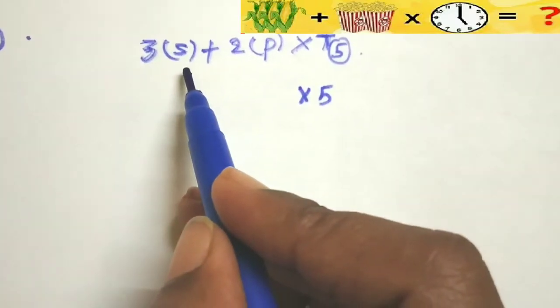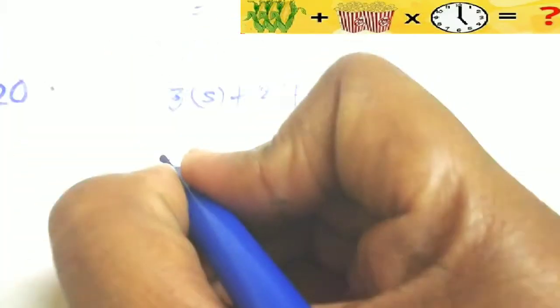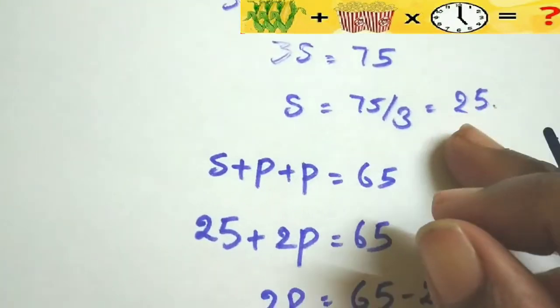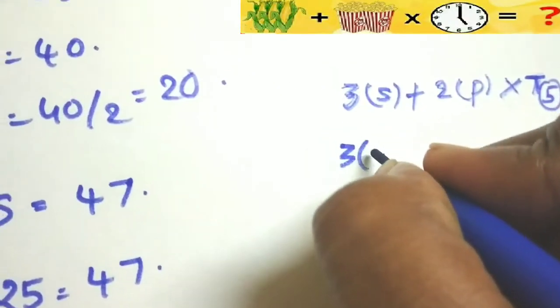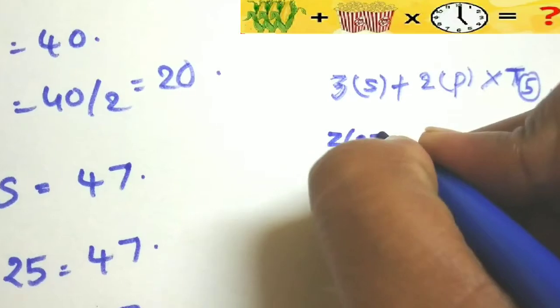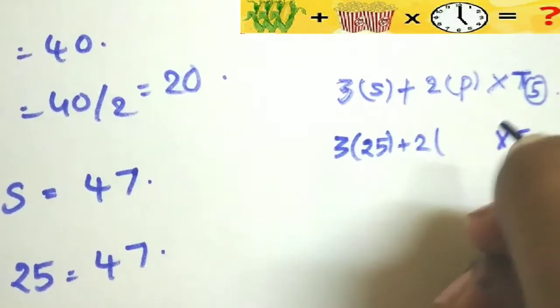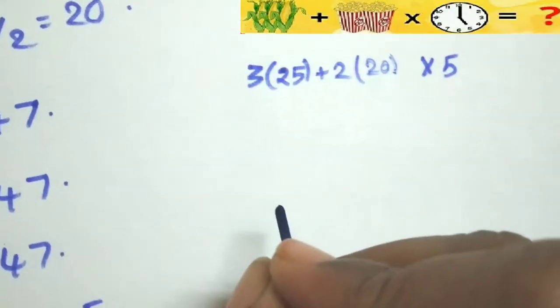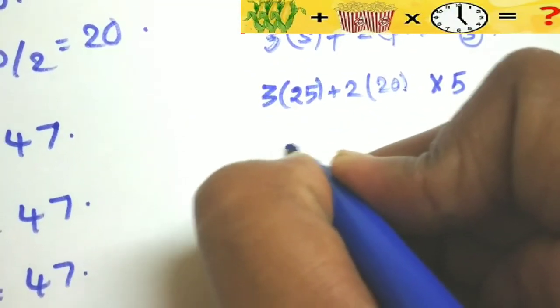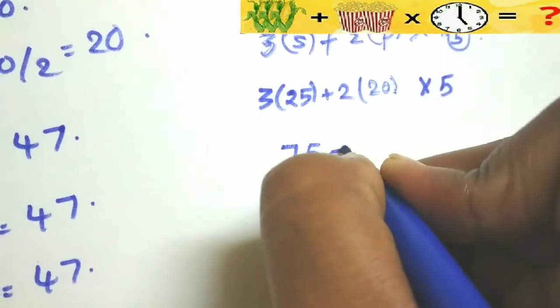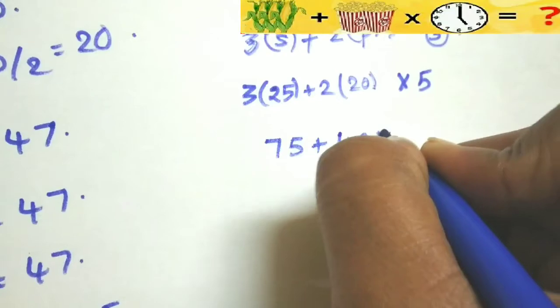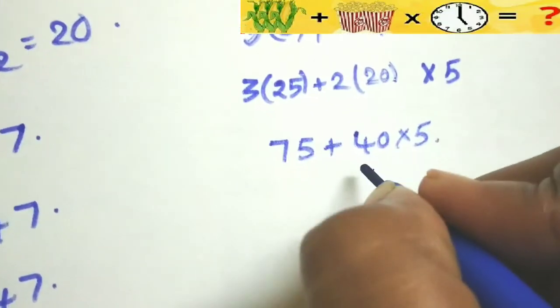Next, substitute the values, what all you got in place of sweet corn and popcorn. So 3 into sweet corn, already you got the value of sweet corn is 25, so 3 into 25 plus 2 into popcorn value, how much you got? 20, so 20. Now simplify: 3 into 25 is 75 plus 2 into 20, 40 into 5.